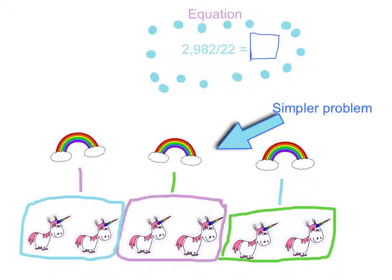Here I modeled a simpler problem of how to solve it. I have 6 unicorns and it takes 2 unicorns to make a rainbow. How many rainbows can they make? Three!